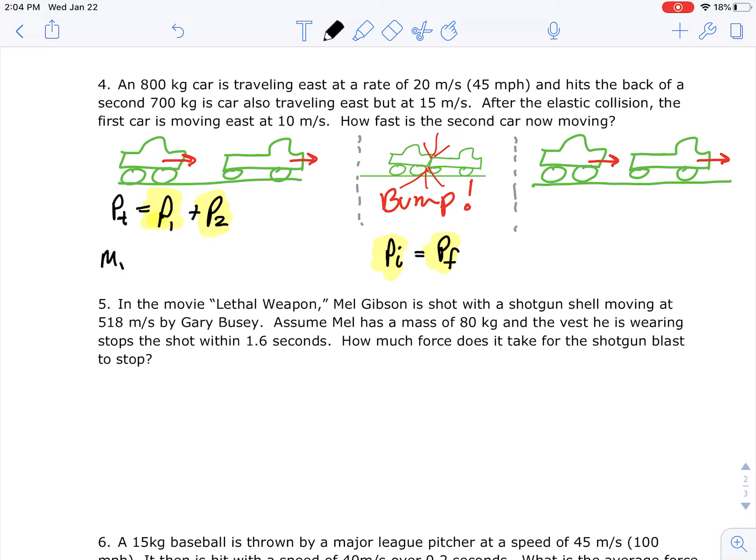So what this is going to look like is M1 V1 plus M2 V2, and this side is going to be the same thing: M1 V1 plus M2 V2. You're going to set those two things equal together using your before and after numbers. You can see on the top, the before numbers, we start off at 20 and we hit the back of another car that's going 15. After they collide, that first car is moving at 10, and then it's asking how fast is the second car going. So you're going to solve for that. All of the masses stay the same.